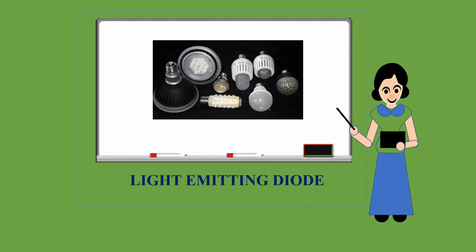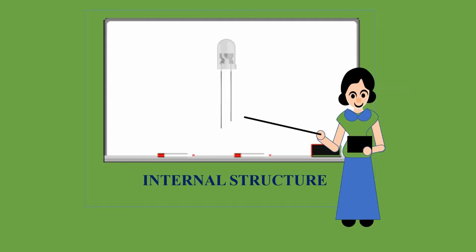As we know, all diodes emit photons, but only solid-state lighting type LEDs emit light instead of heat. It is also called an optical semiconductor device that converts electrical energy into light energy. This is the internal structure of an LED.